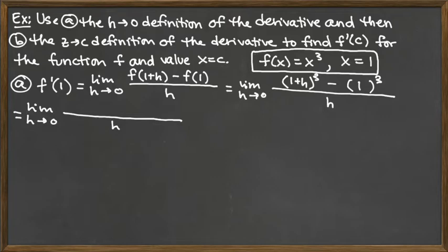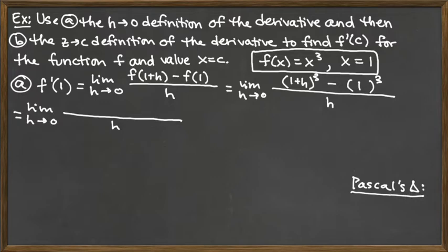To simplify, we're going to have to cube out the 1 plus h. That means taking the factor 1 plus h and multiplying it by itself — three copies of it. You can also use something called Pascal's Triangle to help you multiply this binomial raised to the third power more quickly. Let me tell you a little bit about Pascal's Triangle.